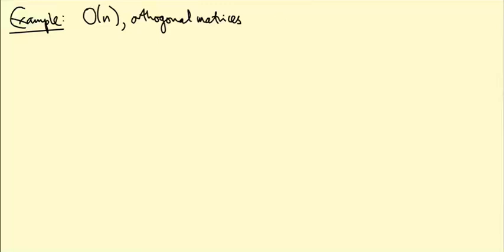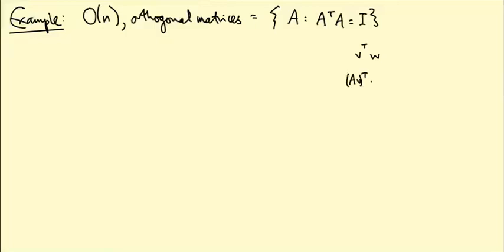So first of all, what does orthogonal mean? It means the matrices A such that A transpose A equals the identity. Geometrically, what this means is A preserves dot products between vectors, because a dot product between V and W is the same as V transpose W. So if you take the dot product between AV and AW, that's AV transpose times AW, which is the same as V transpose A transpose A W. And if you want that to be equal to V transpose W for all V and W, you need A transpose A to be the identity.